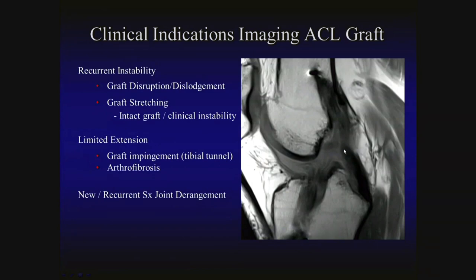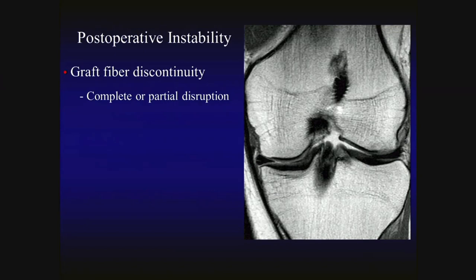A sagittal proton density image illustrates a complete tear of a prior ACL reconstruction, with discontinuity of graft fibers and distally flipped fibers anteriorly into the intercondylar notch. Graft fiber discontinuity is a direct sign of failure of an ACL graft on MR imaging. On a coronal image, complete disruption of ACL graft fibers is clearly visible in this patient with recurrent instability and tearing of their ACL graft.